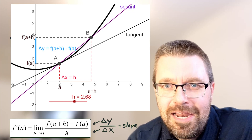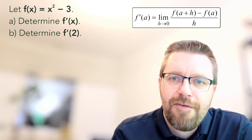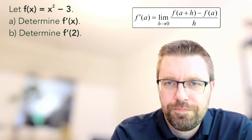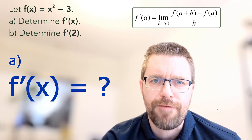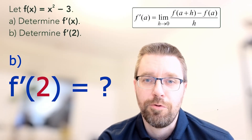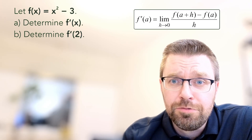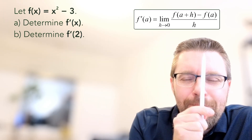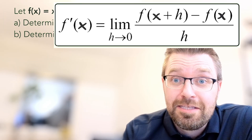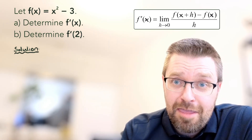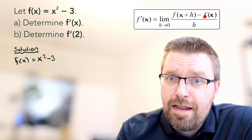Now we will calculate this on a real example. Let f of x equal x squared minus 3. Determine f prime of x, and determine f prime of 2. In the first question, we need to find the function expression for the derivative — an expression where we can insert any value of x and calculate the derivative. In the second task, we determine the derivative when x equals 2, meaning the slope of the graph at that point. I always replace all instances of a with x in the definition, because I think it is easier to write it that way.